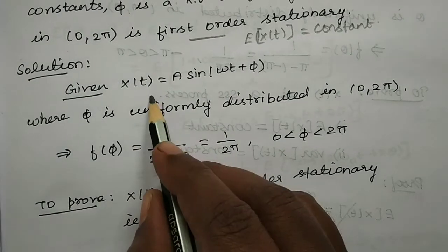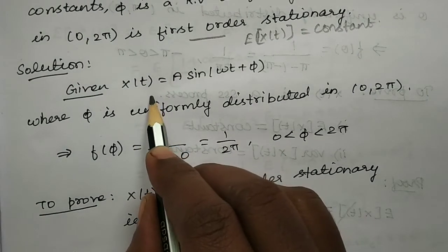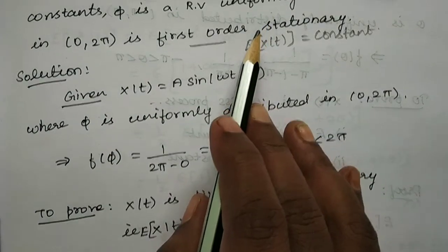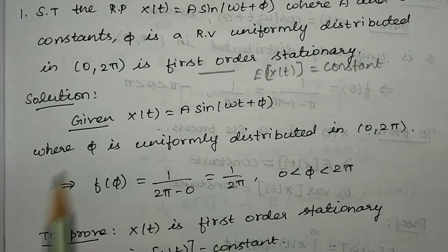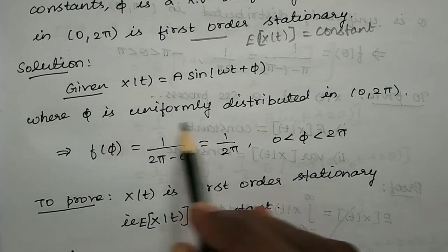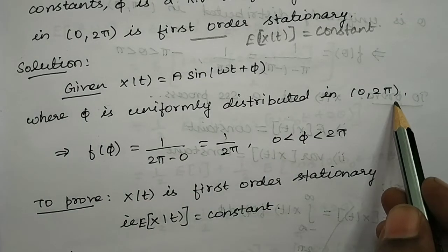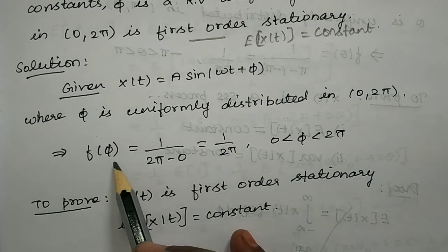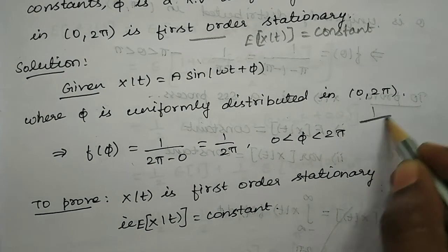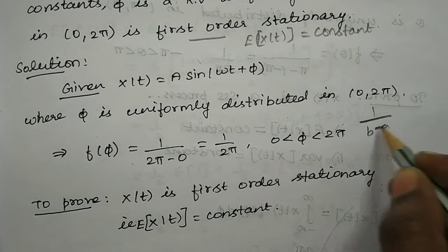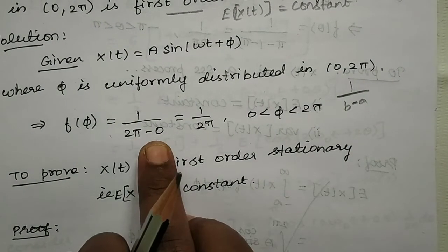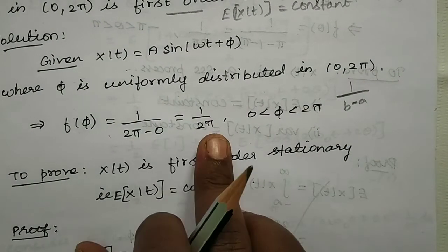Now x of t is given. The distribution stated is uniform distribution with limits 0 to 2π. So φ is uniformly distributed in [0, 2π]. The PDF f(φ) = 1/(b − a), from first unit. So f(φ) = 1/(2π − 0) = 1/2π.